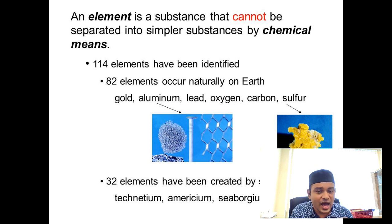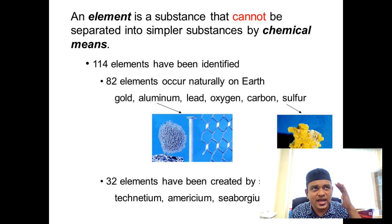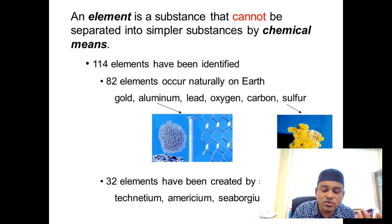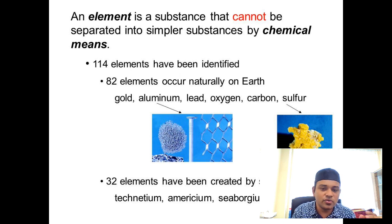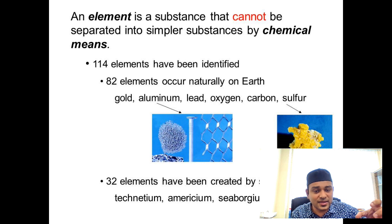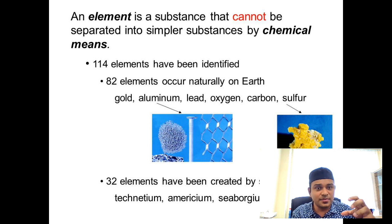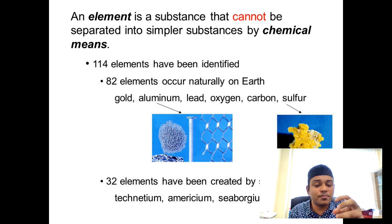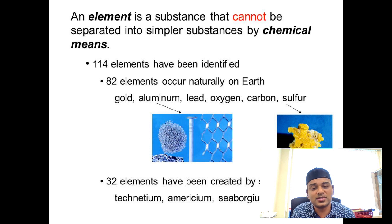For example, I have oxygen — oxygen is an element. I have nitrogen — nitrogen is an element. I can further break this element into a much simpler form. Therefore, we call this an element — the simplest atom.